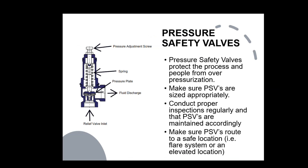Moving on to pressure safety valves — these protect the process and people from over-pressurization. These valves will fly open upon reaching the set point pressure. It is important to make sure that your PSVs are sized appropriately; you do not want a scenario where the PSV does not work because it was not sized accordingly, as this could create a false sense of security and result in a major injury. Conduct proper inspections regularly and maintain the PSVs so they can be credited in a PHA confidently. You always want to make sure that your PSVs route to a safe location, such as a flare system or an elevated location away from any personnel.